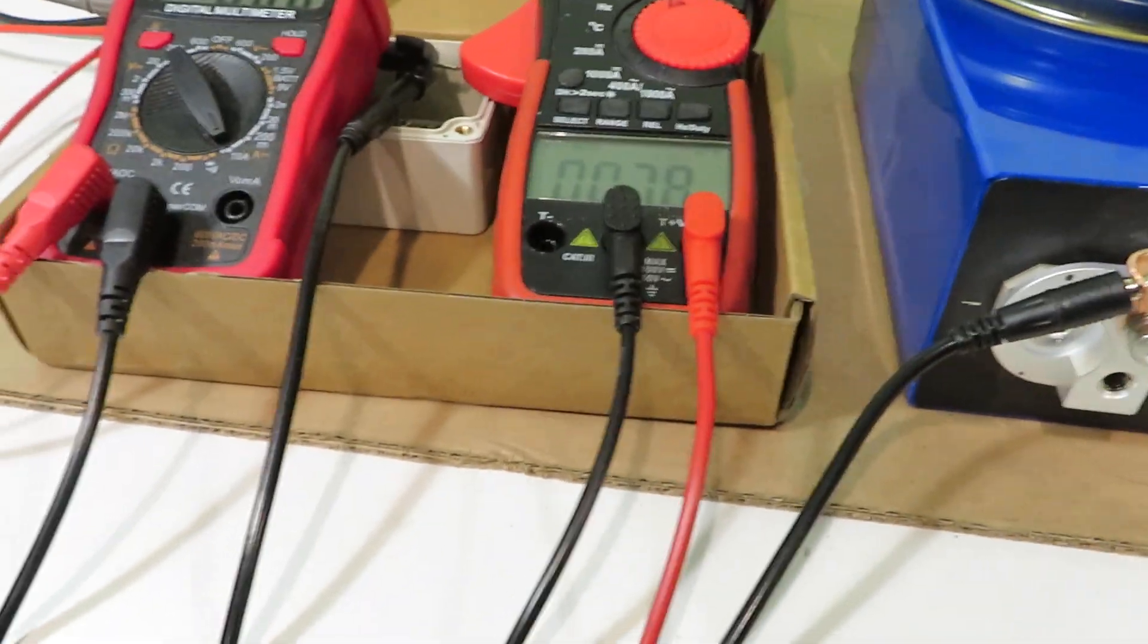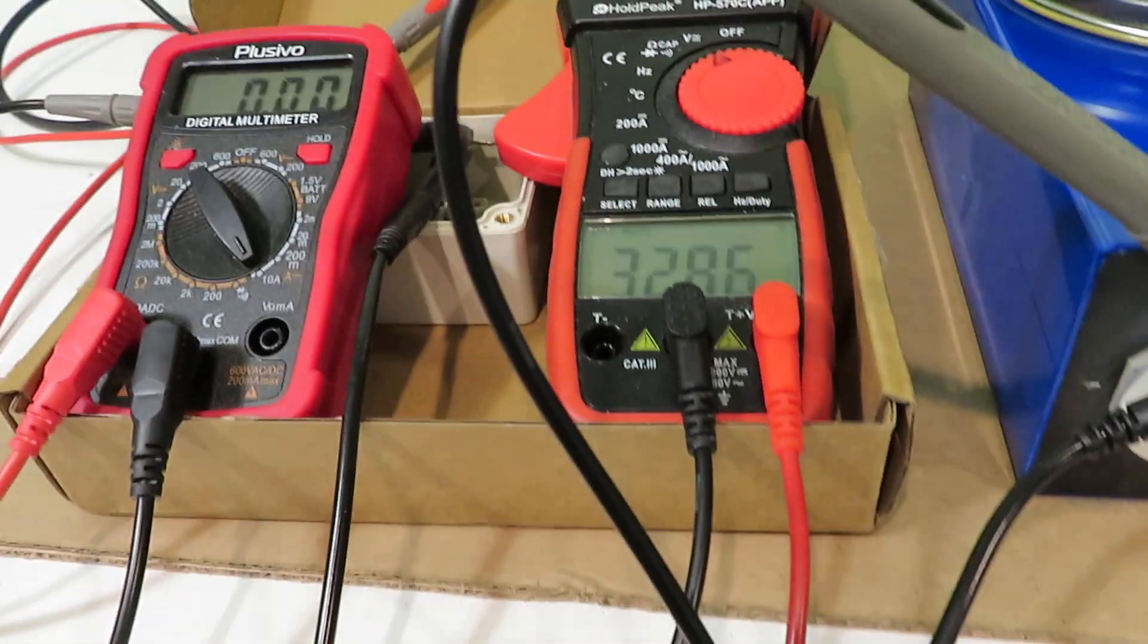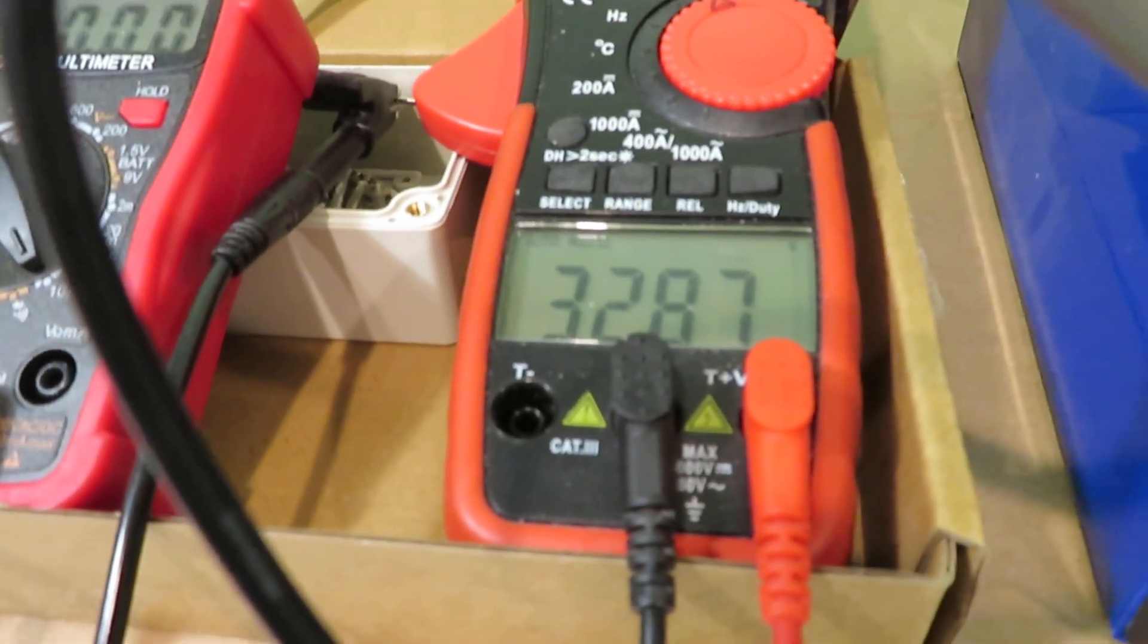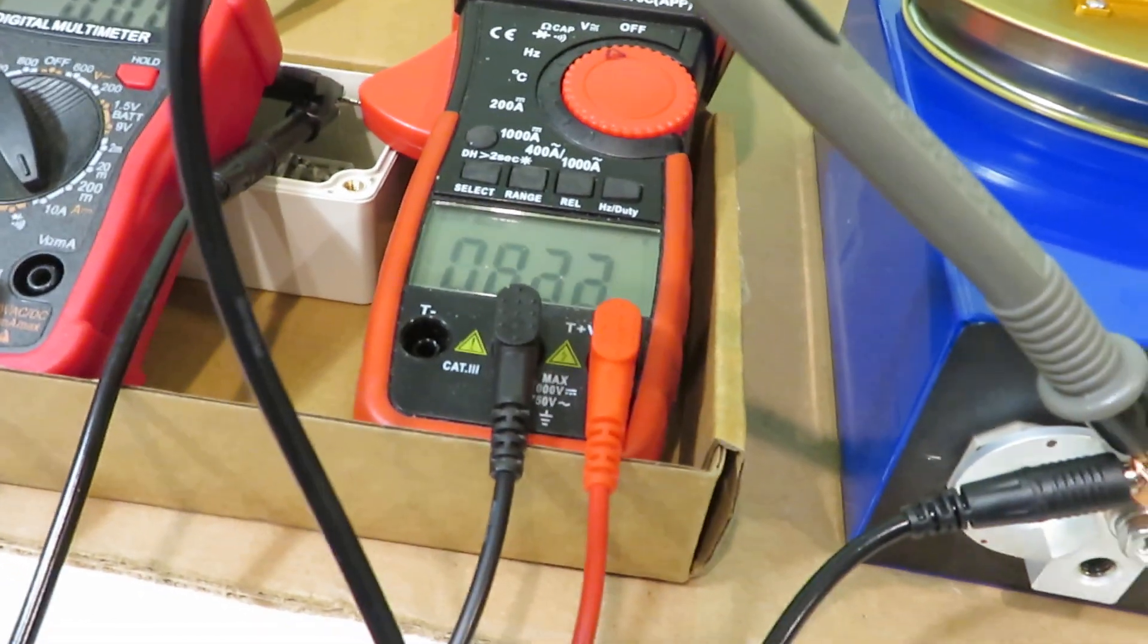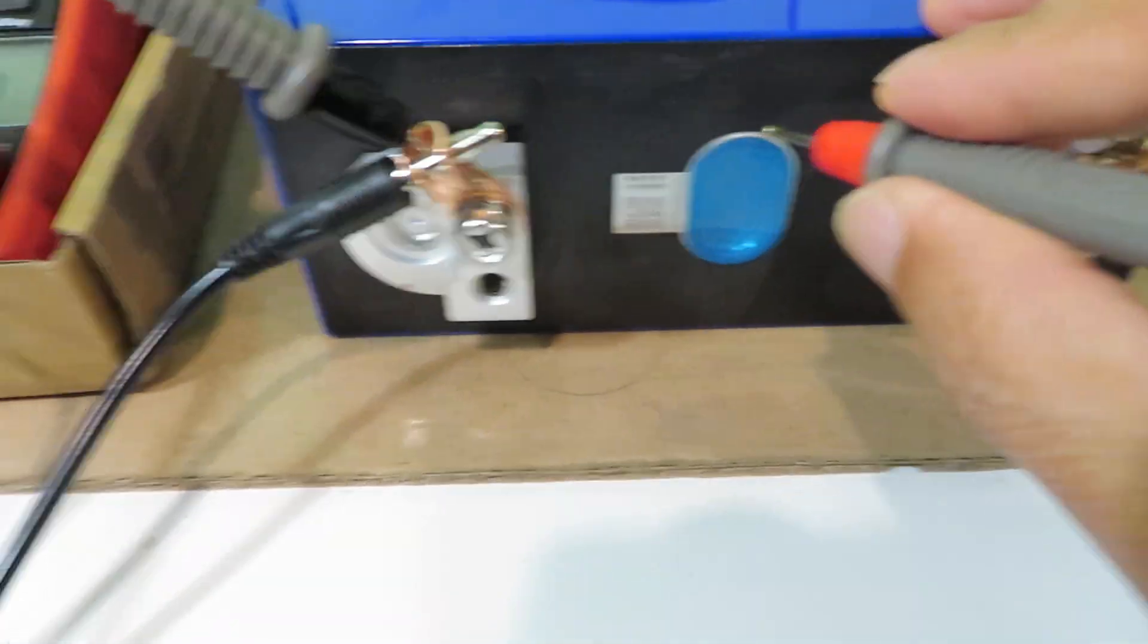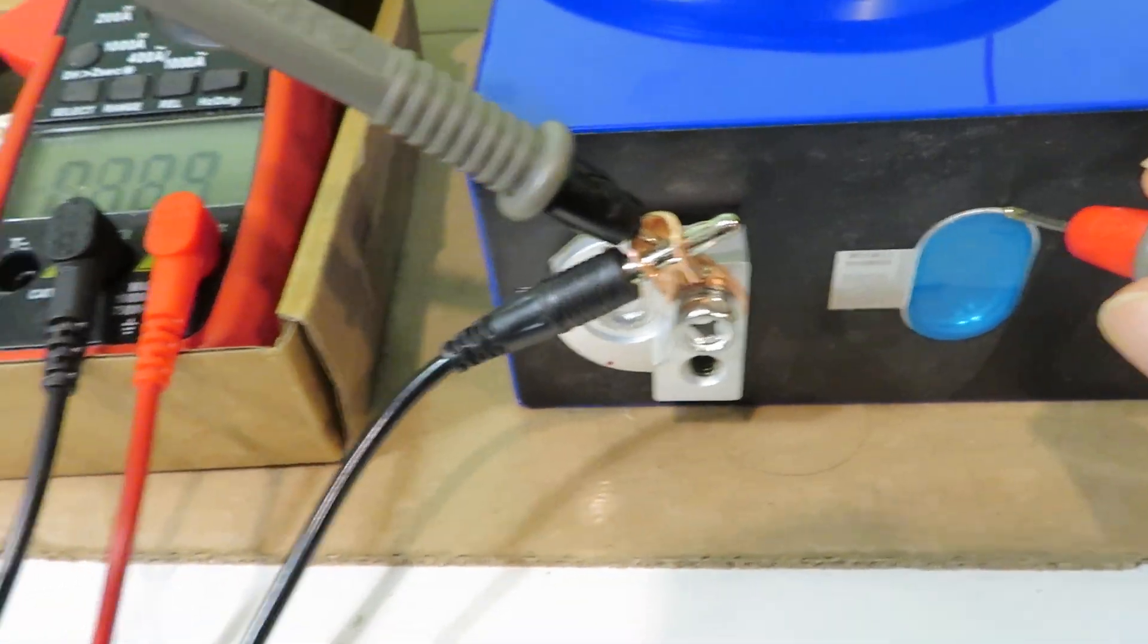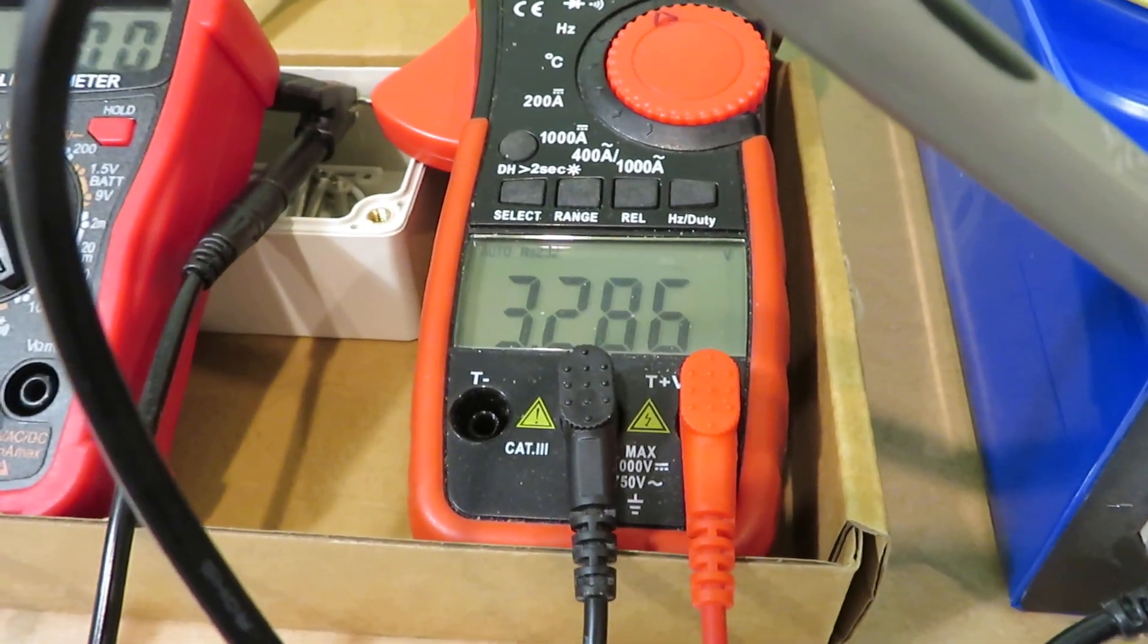So let's put it back and measure the cell voltage. This is the cell voltage. And if I measure the aluminum casing one more time - again, 3.286 volts.